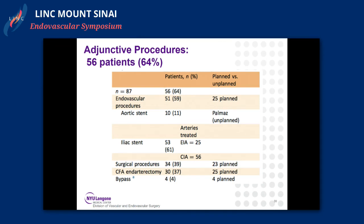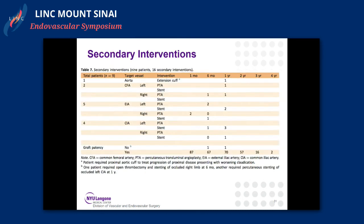Adjunctive procedures are important, especially as we consider procedure cost. Sixty-four percent of patients required adjunctive procedures, as shown here. The majority were planned, with the exception of aortic stents — these were aortas that, despite successful device deployment, had residual narrowing that we treated with a palmaz stent. There were also some surgical adjunctive procedures including surgical endarterectomy and bypass, but again the majority were planned.